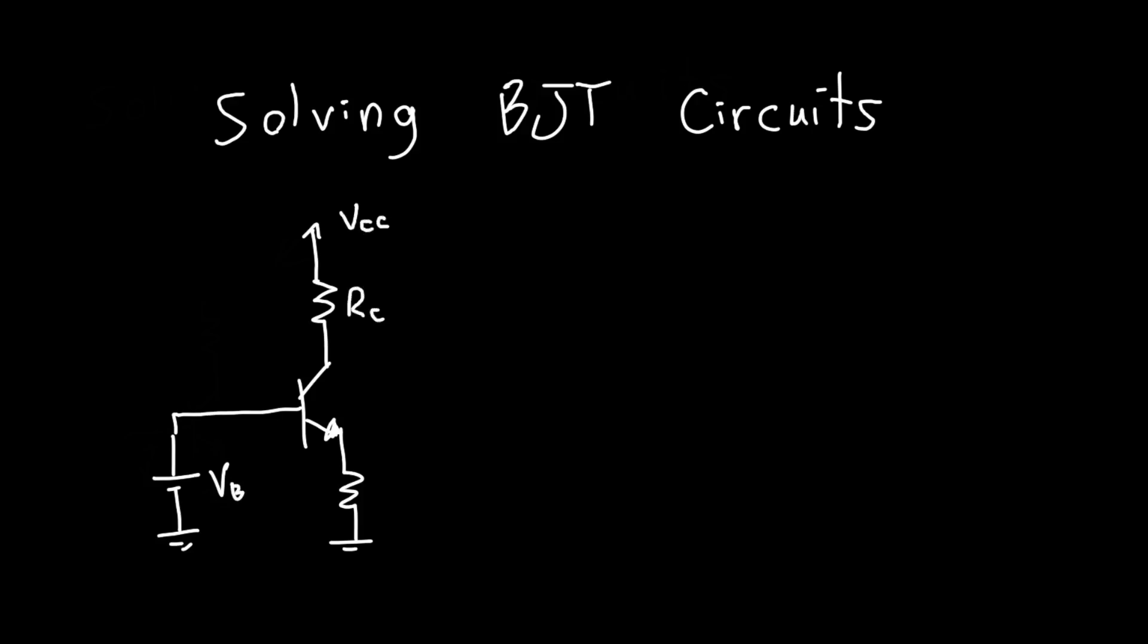In this video we're going to do an example of solving a BJT circuit. We've got a single resistor up top, a resistor down below, and we're going to bias this with some voltage at the base. Let's call this VB. This is VCC, let's call this RC for the collector resistor and RE.